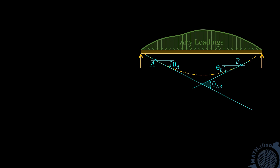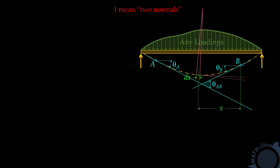Our task is to find the change in slope between A and B. To do that, let us take two points at distance x from B, having distance dx from each other. Now, let us draw tangent and normal to the first point and tangent and normal to the second point. The two tangents will intersect at this point with central angle dtheta, and this is the radius of curvature of the elastic curve. dx can be considered as arc of a circle of radius rho and central angle dtheta. Therefore, dx is equal to rho times dtheta.